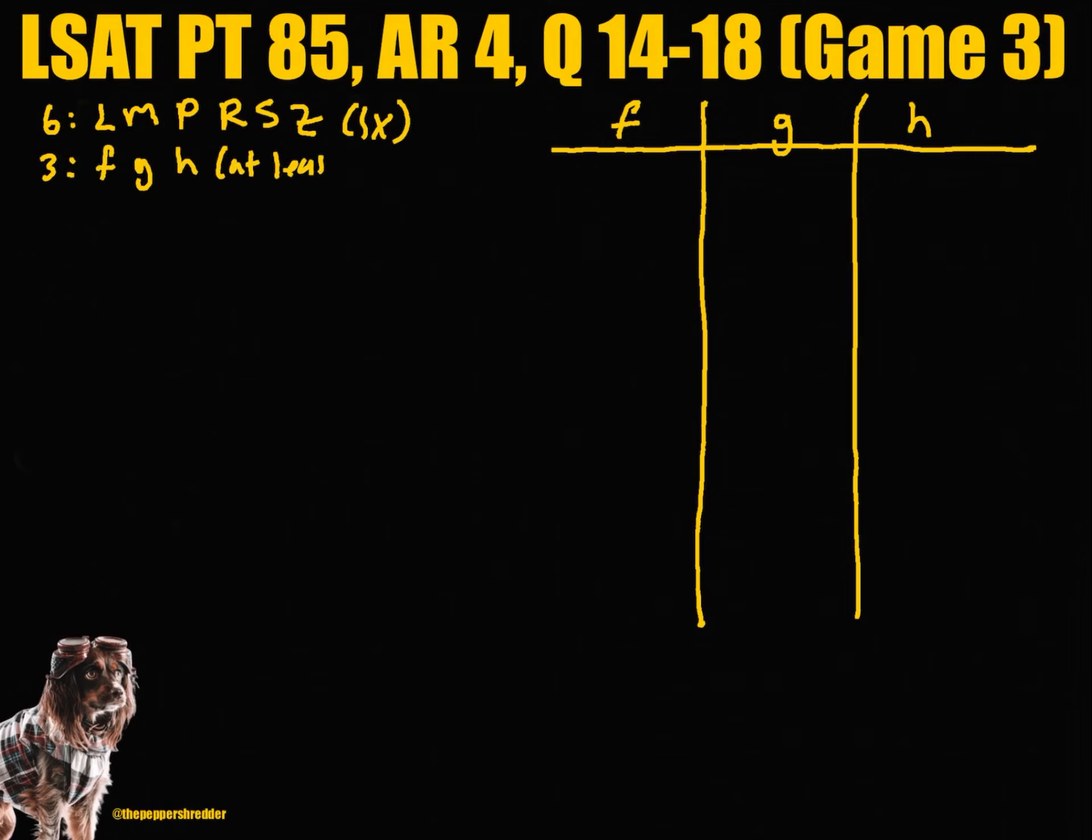There must be at least one actor in each group. The rules are as follows: Rule 1 - L must be grouped with F, or Z must be grouped with F, or both L and Z must be grouped with F. Rule 2 - If M is grouped with G, then there must be only one actor in group G. Rule 3 - There are exactly two actors grouped with H. Rule 4 - M cannot be grouped with H. Rule 5 - P and S must be in the same group.